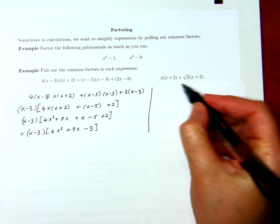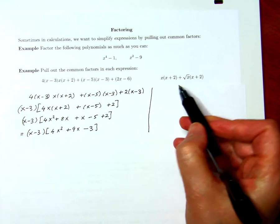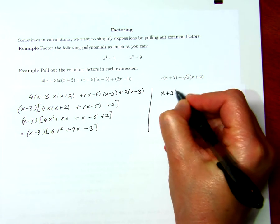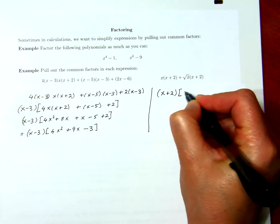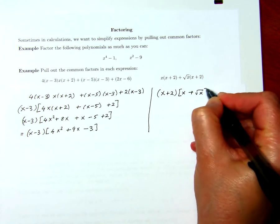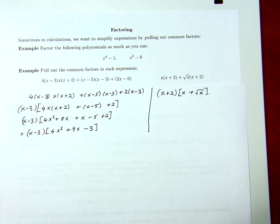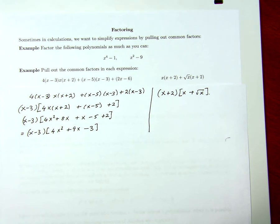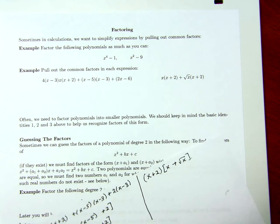What about this one? Can I pull out a common factor? Well, I see x plus 2 is common to both terms, so I can pull that out, and this is equal to x plus 2 times x plus the square root of x. So that's reversing the distributive law and pulling out the common factors. That's about as tidy as I can get that, so I'm going to leave it as it is.